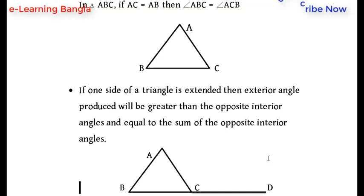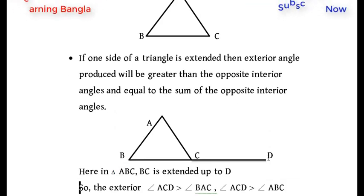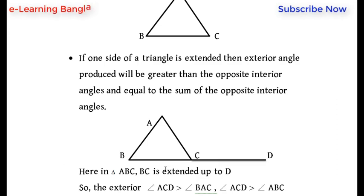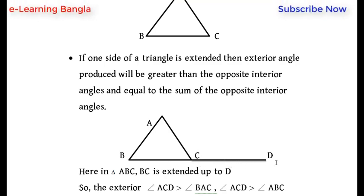If one side of a triangle is extended, the exterior angle produced will be greater than each of the opposite interior angles, and equal to the sum of the two opposite interior angles.